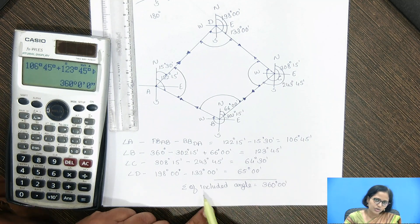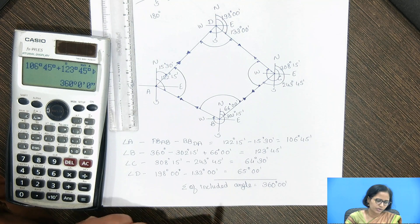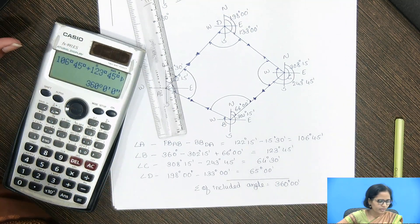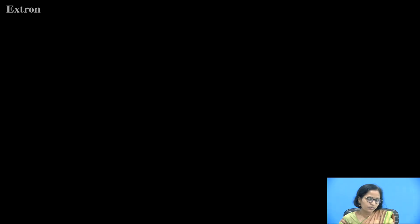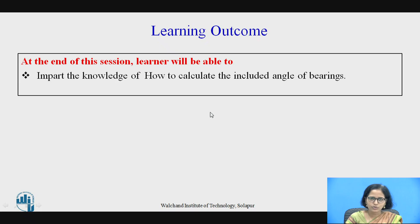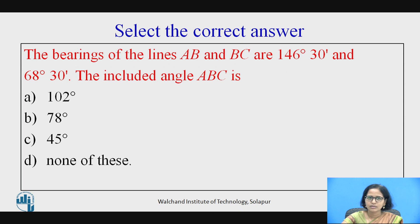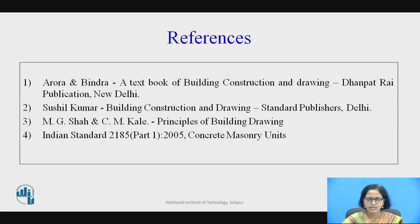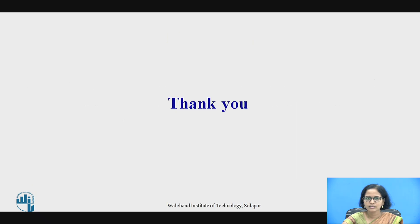This is how the traverse is drawn when we perform it in the field. For the MCQ: the bearings of lines AB and BC are 146 degrees 30 minutes and 68 degrees 30 minutes — you can find the included angle from this. The references are provided. Thank you.